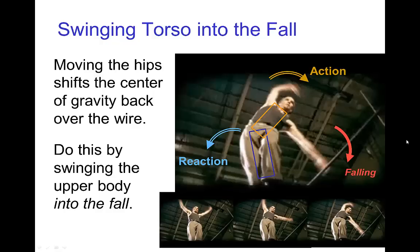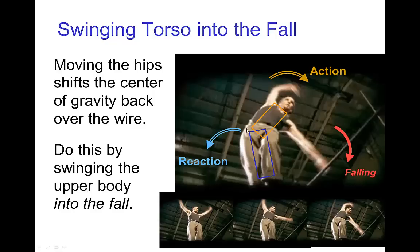When even more recovery is needed, the tightrope walker needs to shift their hips rapidly, and that can be done by throwing the whole upper body into the fall. Here in these poses, we see this tightrope walker — in order to recover balance, he is throwing his upper body and also rotating his arms in the direction of the fall. That action allows his lower body to rotate in the other direction, in this case counterclockwise, allowing the hips to shift back over the wire and repositioning the center of gravity over the wire.